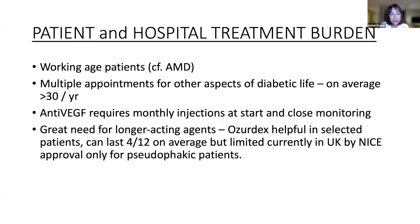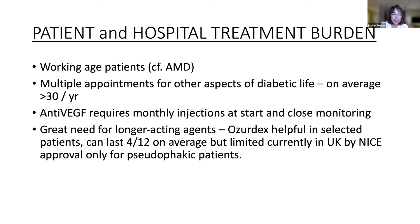If there's a suboptimal response, consider switching — if already pseudophakic, steroid, particularly if they have those biomarkers. We have different steroids available. There's a huge need for longer-acting agents — Ozurdex (dexamethasone) lasts about four or five months on average and is currently only for pseudophakic patients. If somebody has significant DMO and has a degree of cataract, we will offer cataract surgery and put the Ozurdex in at the same time. We can't treat phakic patients with Ozurdex currently.